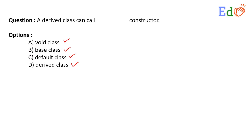The answer is option B, because the base class constructor can be called from the derived class constructor. So the correct answer is option B — the base class constructor.